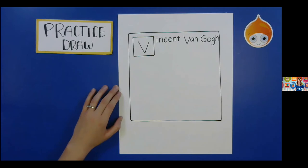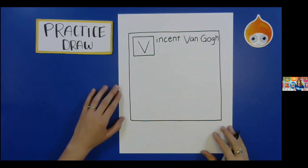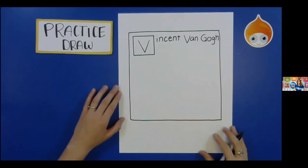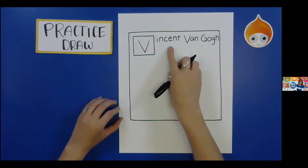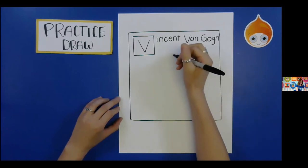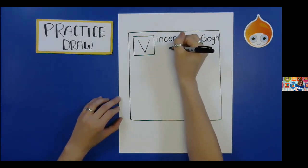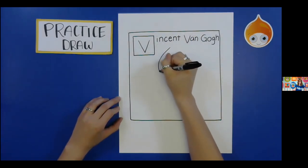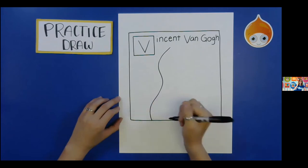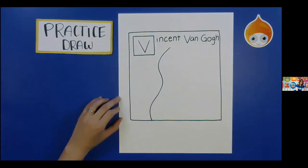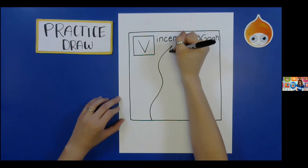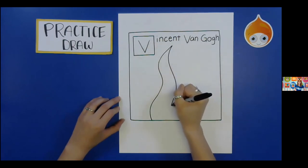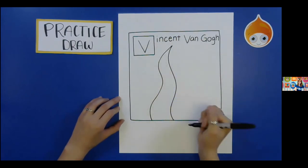Now in his picture Starry Night, he has a large cypress tree, and we're going to be drawing that cypress tree in our picture. So we're going to draw a big curved line to the bottom of our paper, and make sure it's connected at the top, and draw the same curved line back to the bottom. Make sure it is connected at the top.